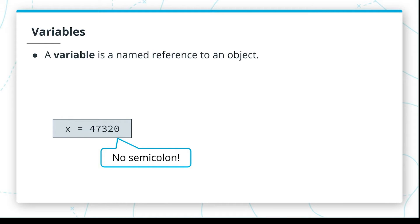In Python, a variable is a named reference to an object. It's a line of code that looks like x equals 47,320. And you'll note that in comparison with other languages, you don't need a semicolon at the end of variable declarations. In this case, the variable is x. It's a name x.